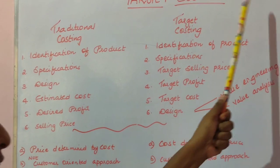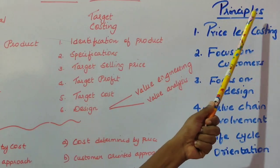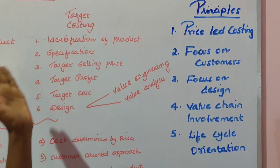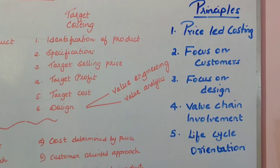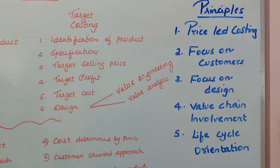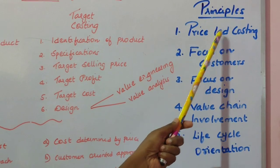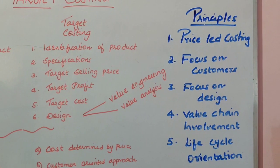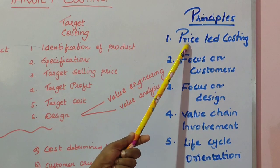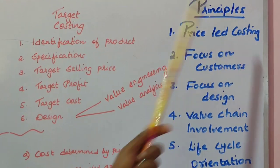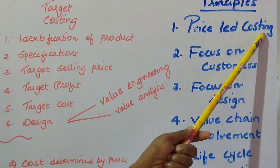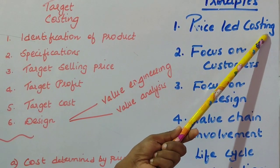Coming to the next concept: the principles of target costing. Target costing has five main principles. The first is price-led costing — in target costing, the price leads to costing, meaning the selling price determines the cost for the product.